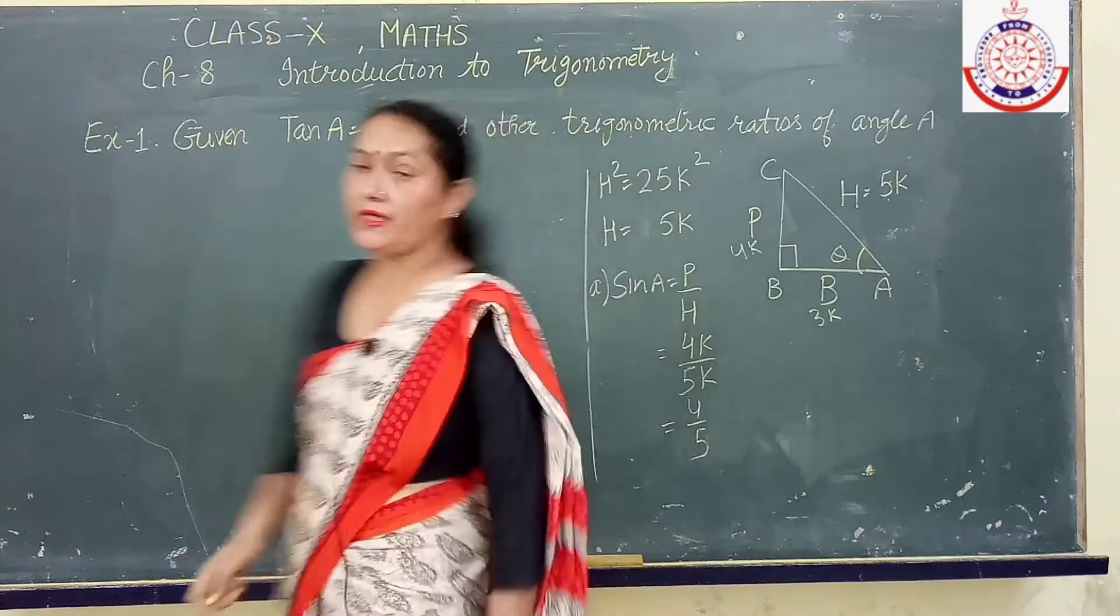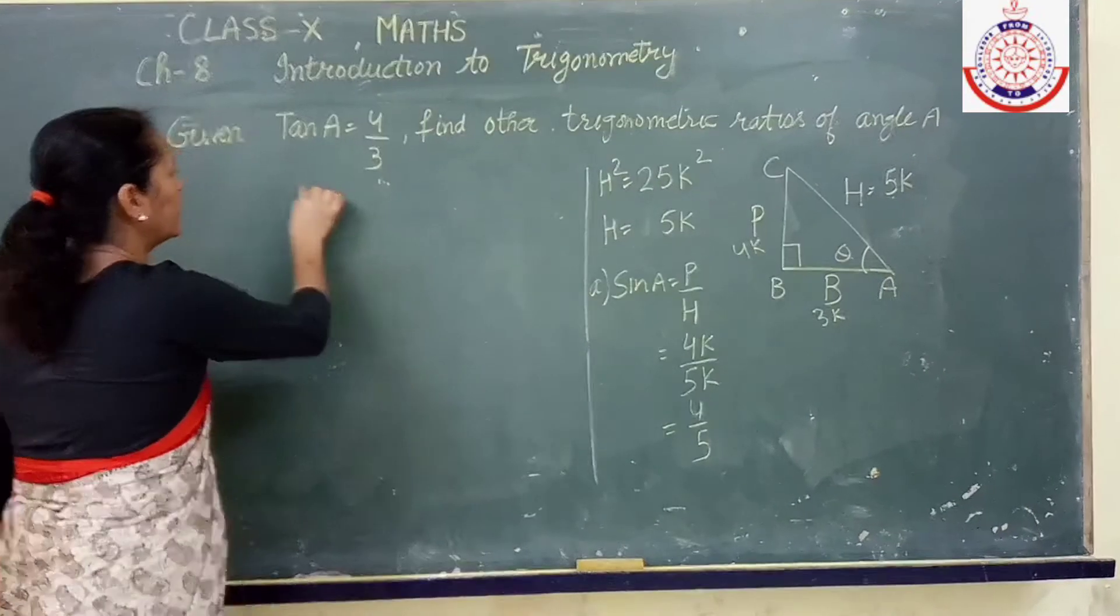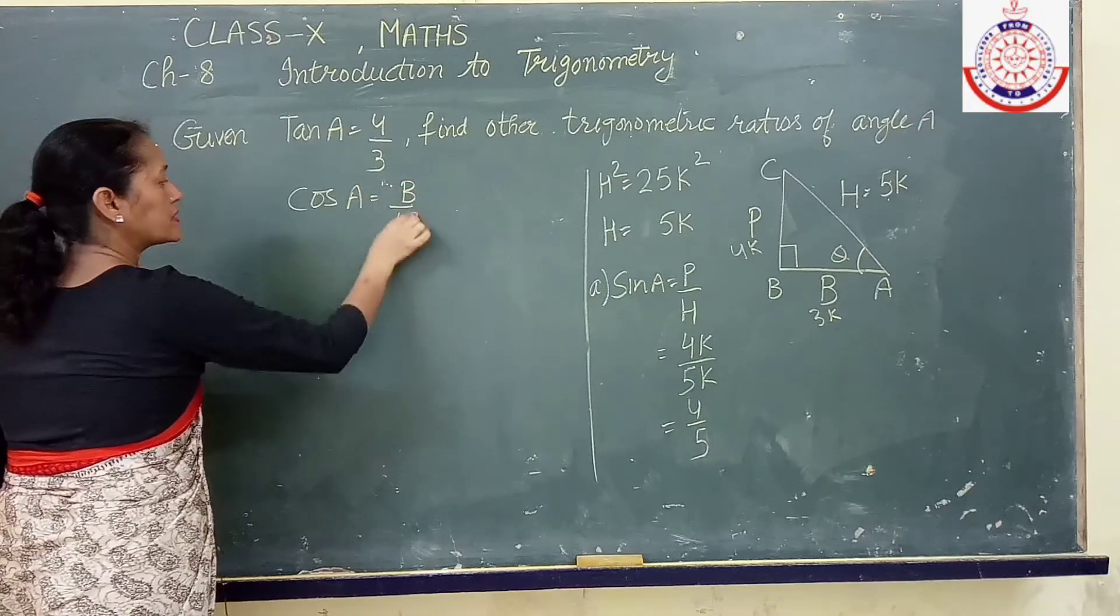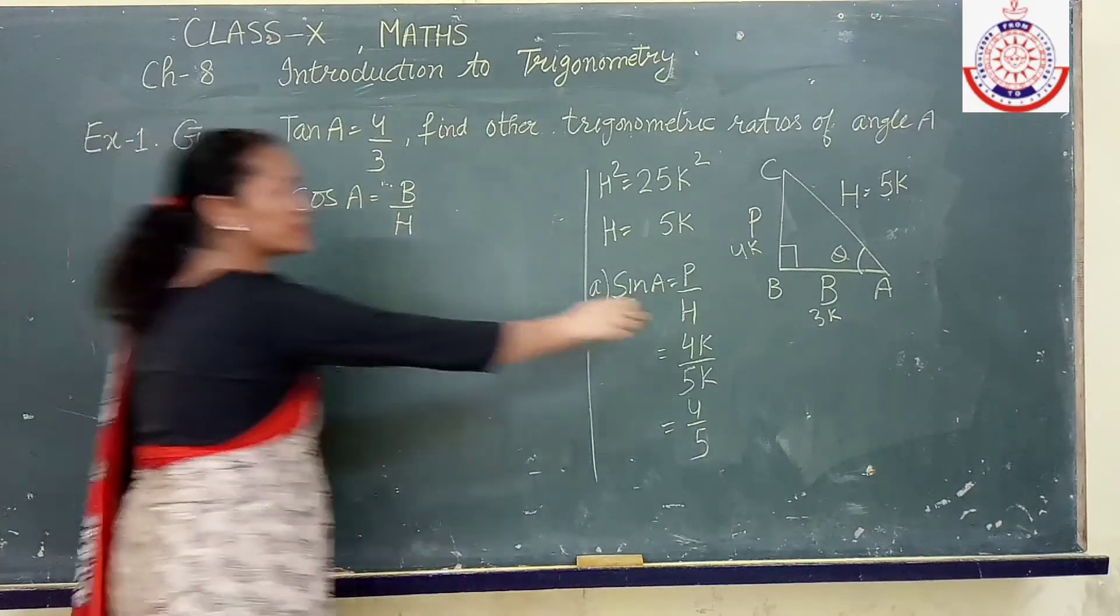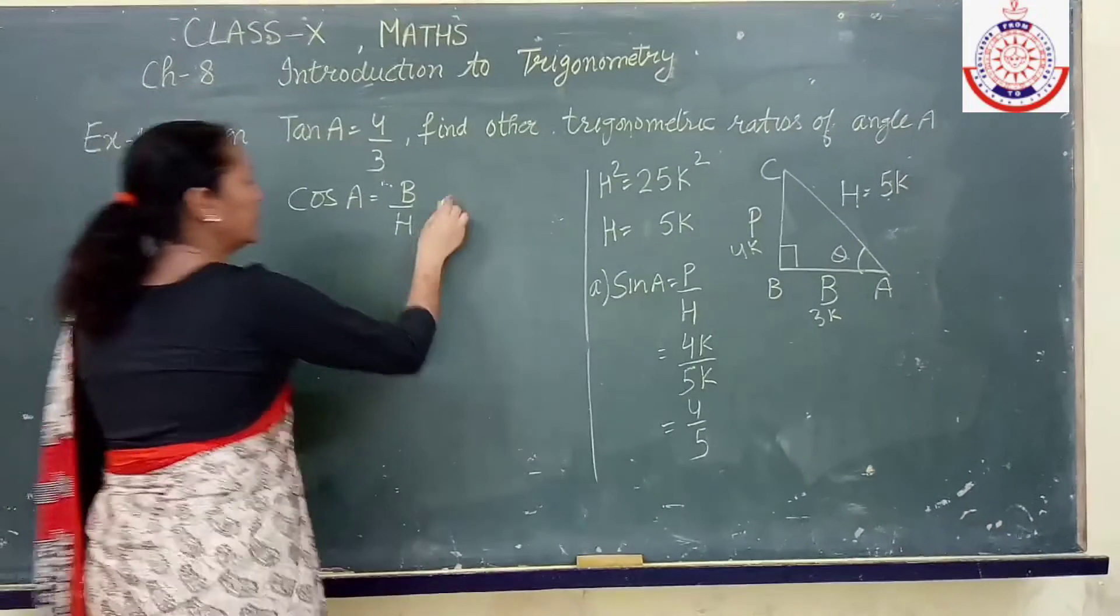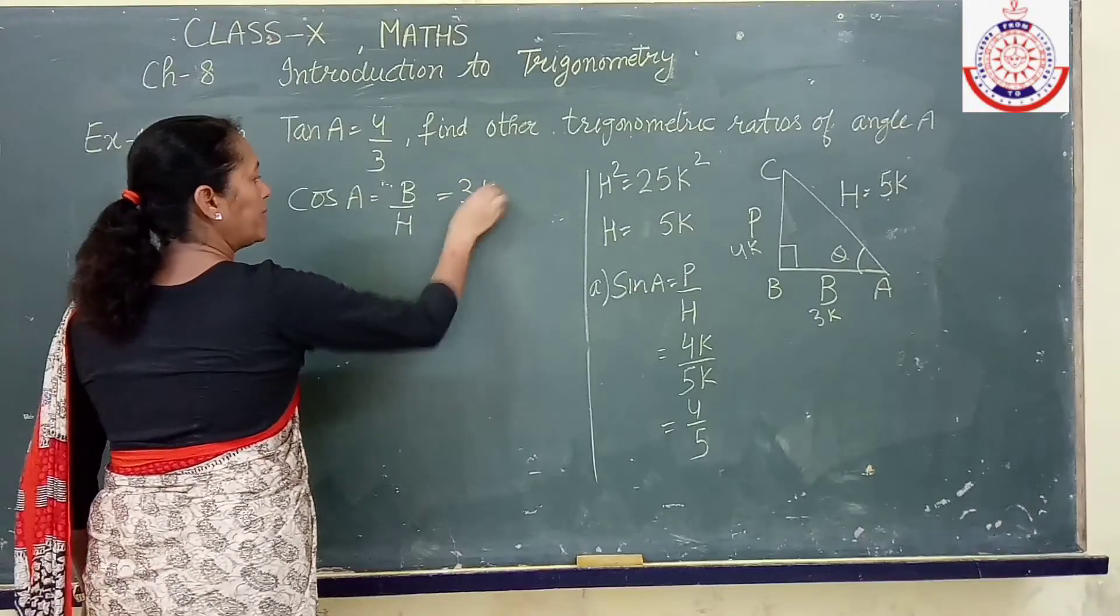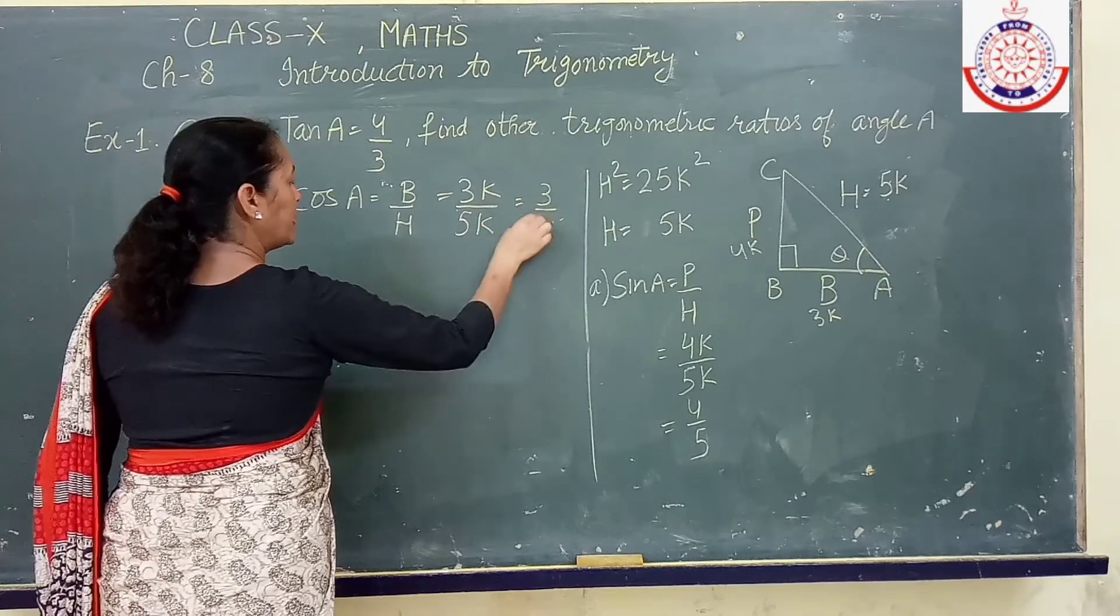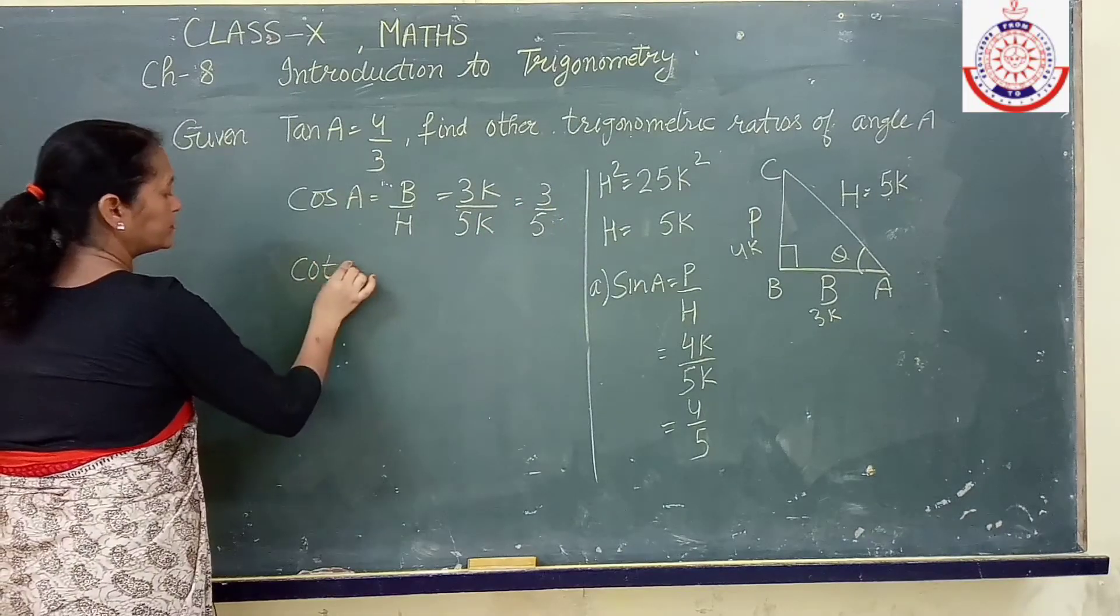Next we will be finding cos A. Cos we have learned it is equal to base upon hypotenuse. And base is given to us 3k. So this will be 3k upon 5k. K will get cancelled.